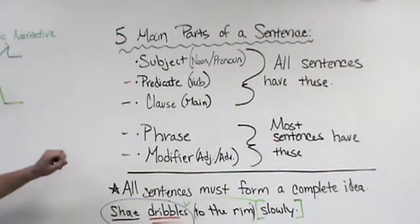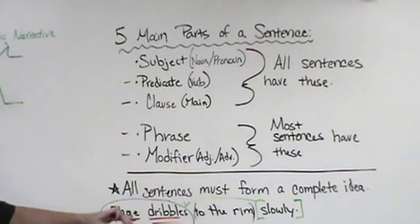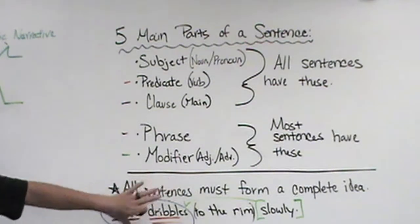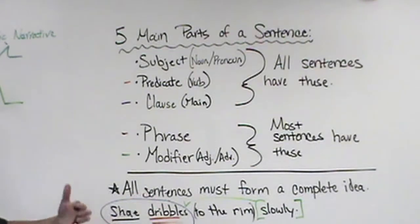So we have, so this is a sentence. It checks out. In order to be a sentence it just needs this stuff in blue, because it has to have a subject, has to have a verb. This makes an independent clause. It's a complete thought. I can just say 'Shay dribbles.' It's a statement.